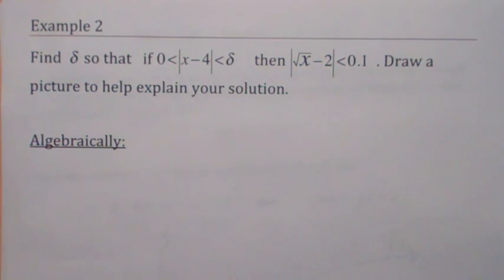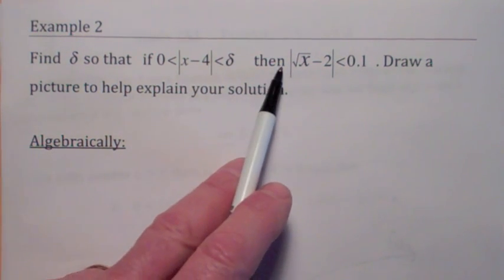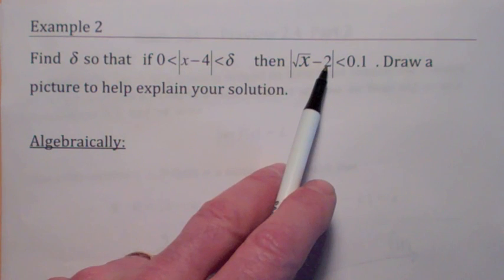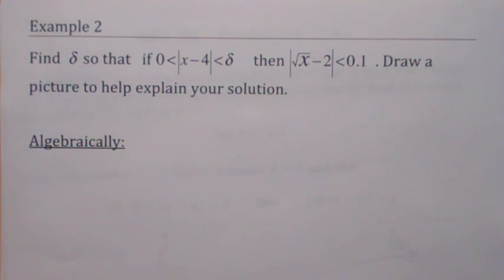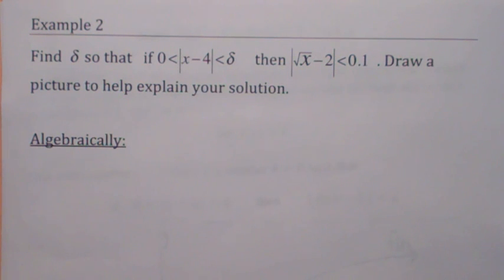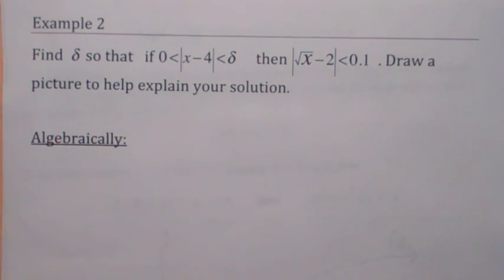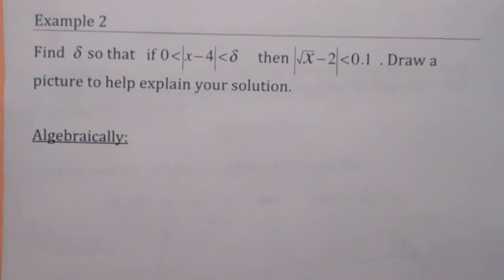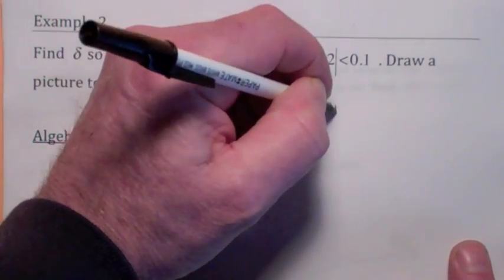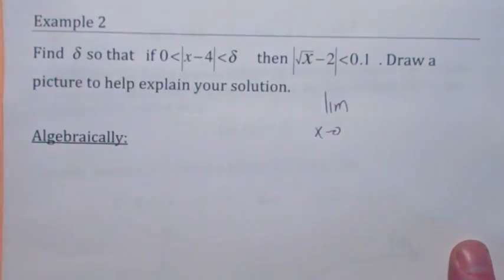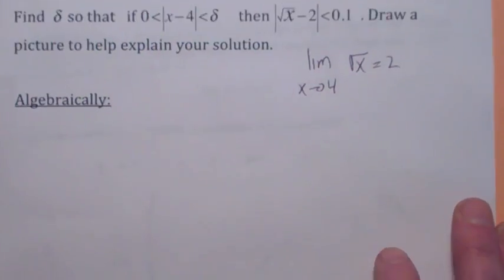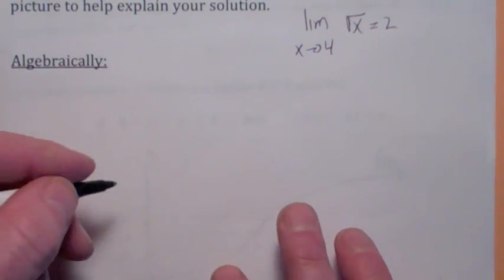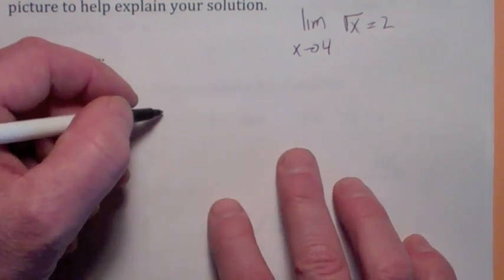Okay, let's look at this example. You want to find a delta so that if x is within delta units of 4, then the absolute value of the square root of x minus 2, this would have to be f of x, is less than 0.1. So, we're going to actually find the delta for a specific epsilon. This is another thing I could ask you to do. In terms of a limit, isn't this just saying that the limit as x gets close to 4 of the square root of x equals 2? So, let's draw a picture of this. Let's see if we can find the delta algebraically, and then I'll show you how to use your TI to do it also.